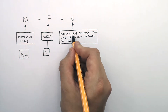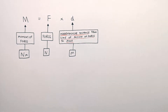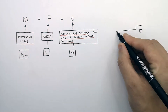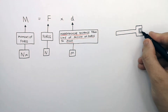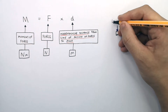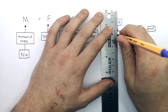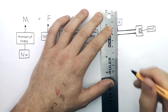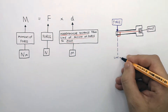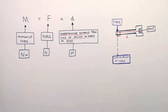Remember, D the distance is the perpendicular distance from the line of action of the force to the pivot. This here is a bolt and a spanner. The bolt is represented as the pivot, and the force acting on the spanner to cause a turning effect — which is the moment — is here. This is the line of action of the force, and D is the perpendicular distance from the line of action of the force to the pivot.